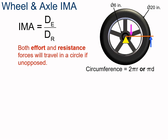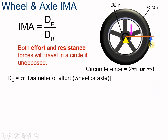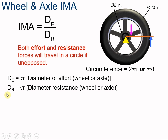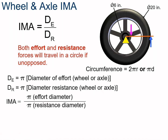We know that the circumference is 2πr or π times d. The distance of the effort is π times the diameter of the effort — whether it's the wheel or the axle — and the resistance is π times the diameter of the resistance. When we divide, we have π times the effort diameter divided by π times the resistance diameter. The π's cancel, so we're left with the effort diameter divided by the resistance diameter.